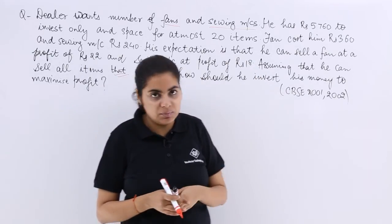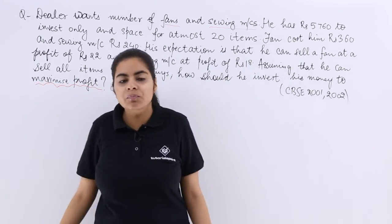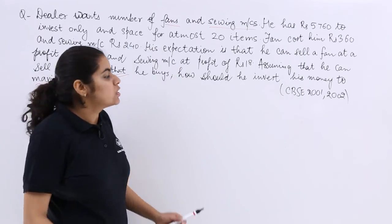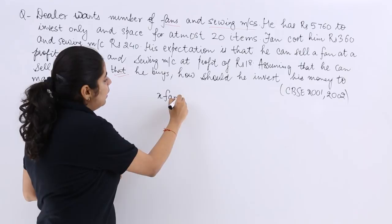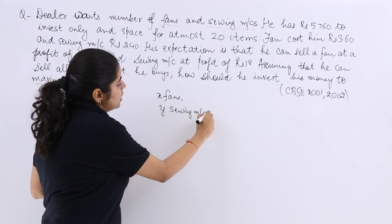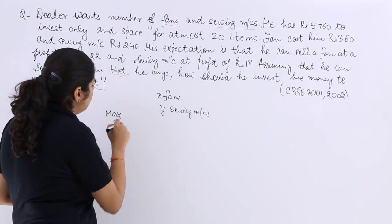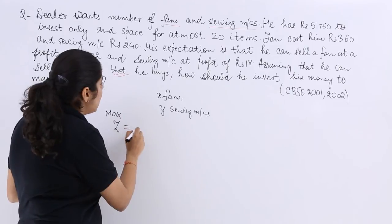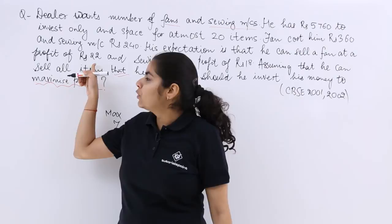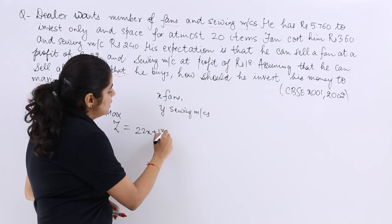The question asks: how should he invest his money to maximise profit? This is a maximise-profit problem. Let there be x fans and y sewing machines. The objective function Z, which we have to maximise, is Z = 22x + 18y.